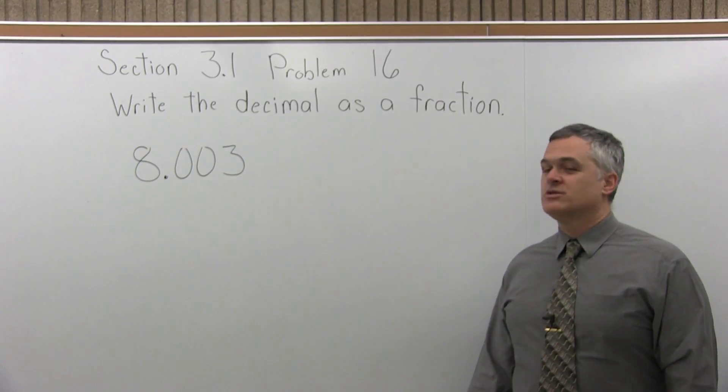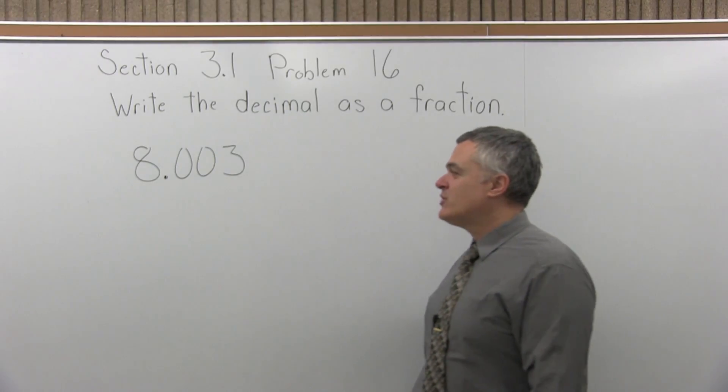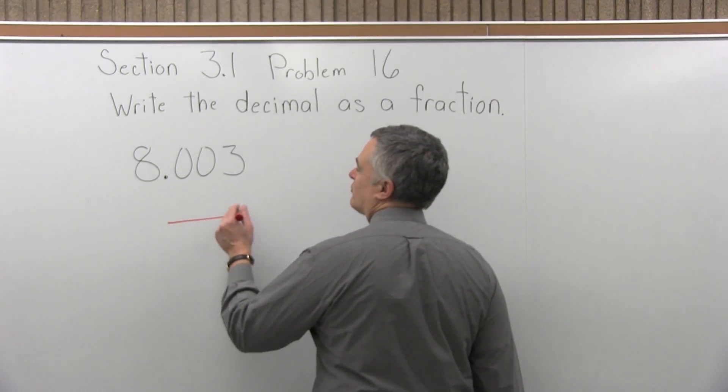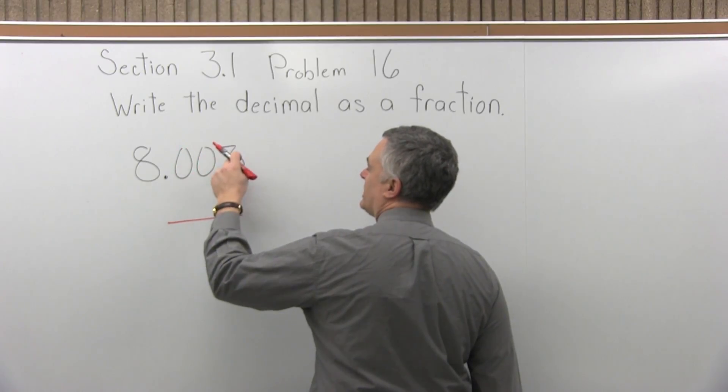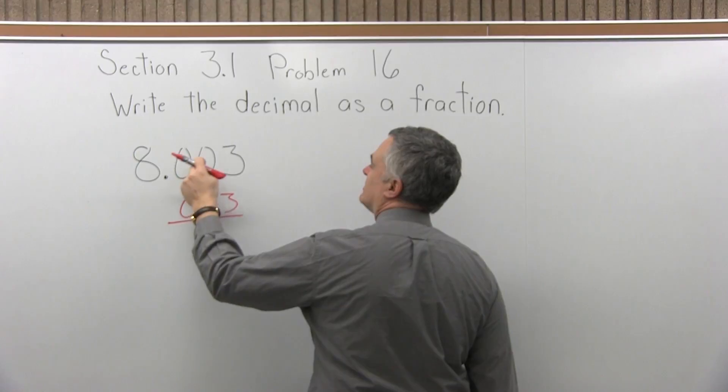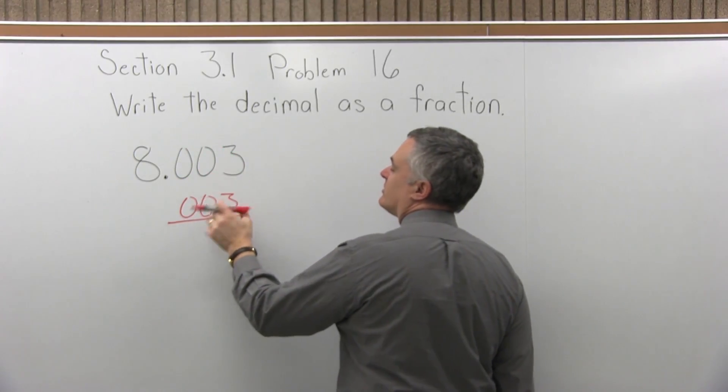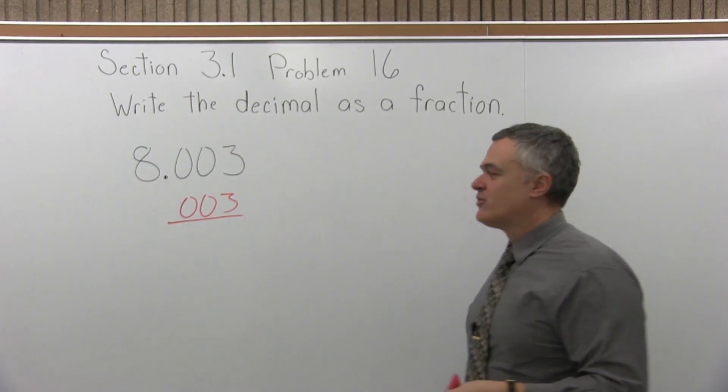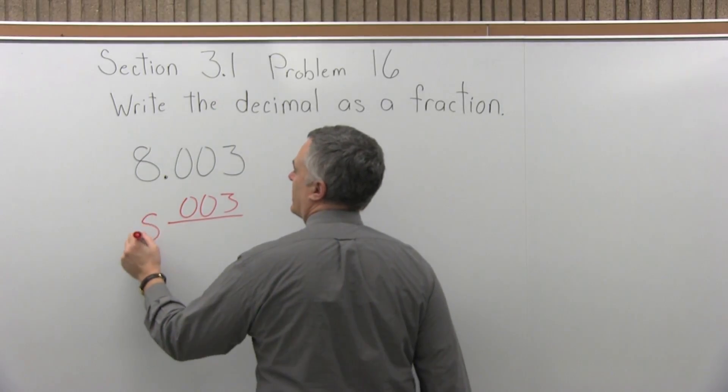So to turn this into a fraction, this is a four-step process. The first step is write what comes after the decimal in the numerator of a fraction. So after the decimal, I have 003. I write the 003 in the numerator of a fraction. There's an 8 in front of that, so I can just keep the 8 in front of the fraction.